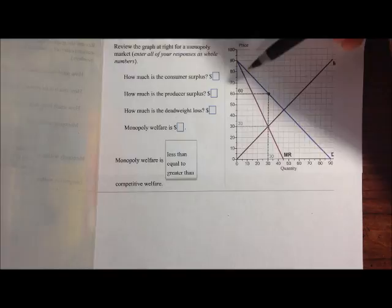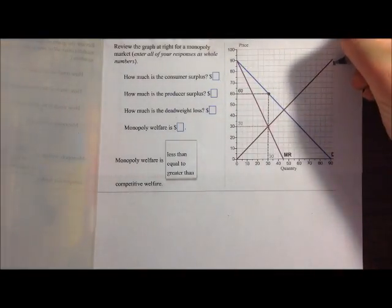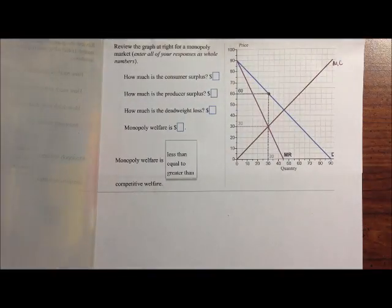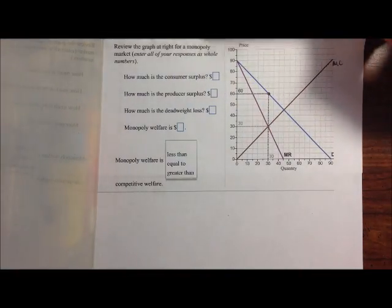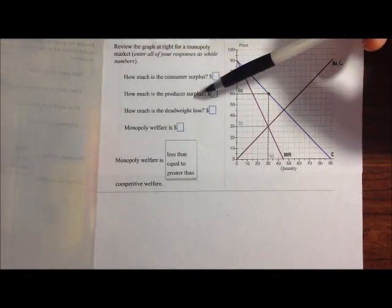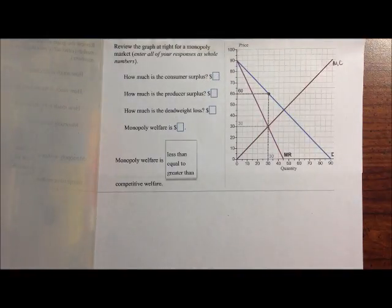So we have our demand curve, we have our marginal cost curve, and we have our marginal revenue curve. And we're asking this problem to figure out what the consumer surplus, producer surplus, and deadweight loss are.